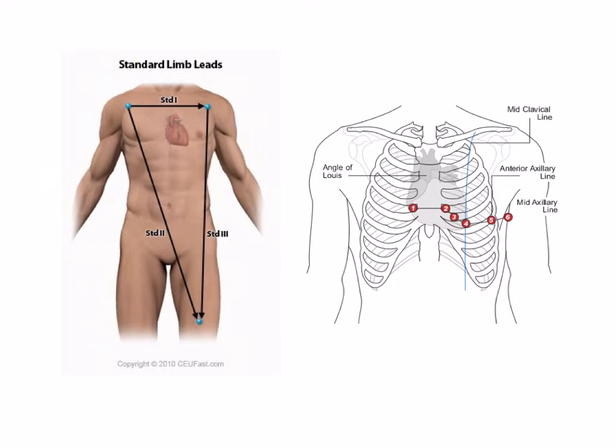So next we're going to talk a little bit about the different leads that we're going to be placing on our patients when obtaining our 12-lead EKG in the ER. The first set of leads we're going to place is going to be our standard limb leads, and these are typically located on the left shoulder, right shoulder, as well as the left thigh. And on our EKG, these leads are going to give us our leads 1, 2, 3, as well as our augmented leads AVF, AVL, and AVR.